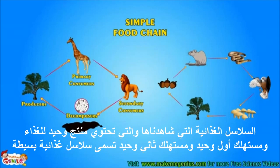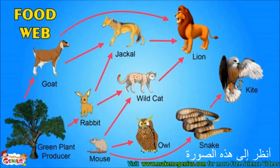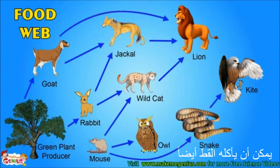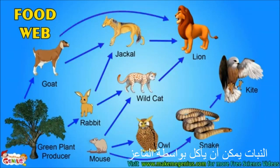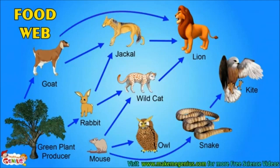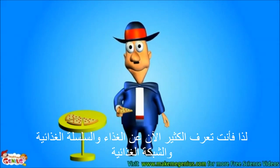Food chains with one producer, one primary consumer, and one secondary consumer are called simple food chains. But life is not so simple. A rat can be eaten by a cat or by a snake; a plant can be eaten by a goat or by a rabbit. These complex food chains are called a food web, as they are interconnected like a spider web.